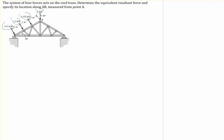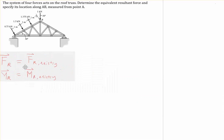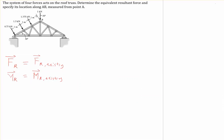Somewhere along line segment AB should be that force. Since we don't know its magnitude or direction, we can resolve the force into two directions. This is essentially a question of finding two equivalent force systems. Two equivalent force systems must satisfy the requirement that the resultant force of the replacement force system must equal the resultant force of the existing force system, and the moment of the replacement force system must equal the moment of the existing force system.